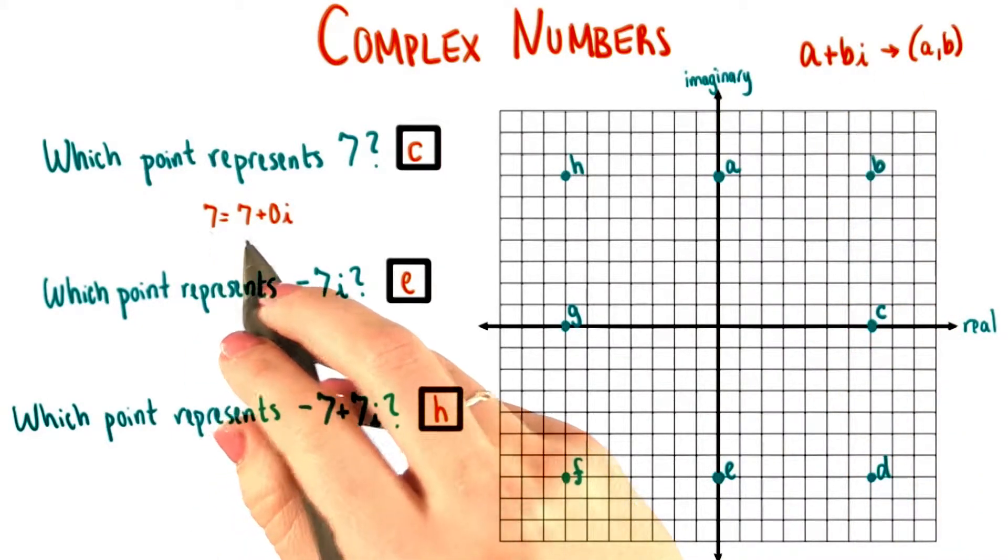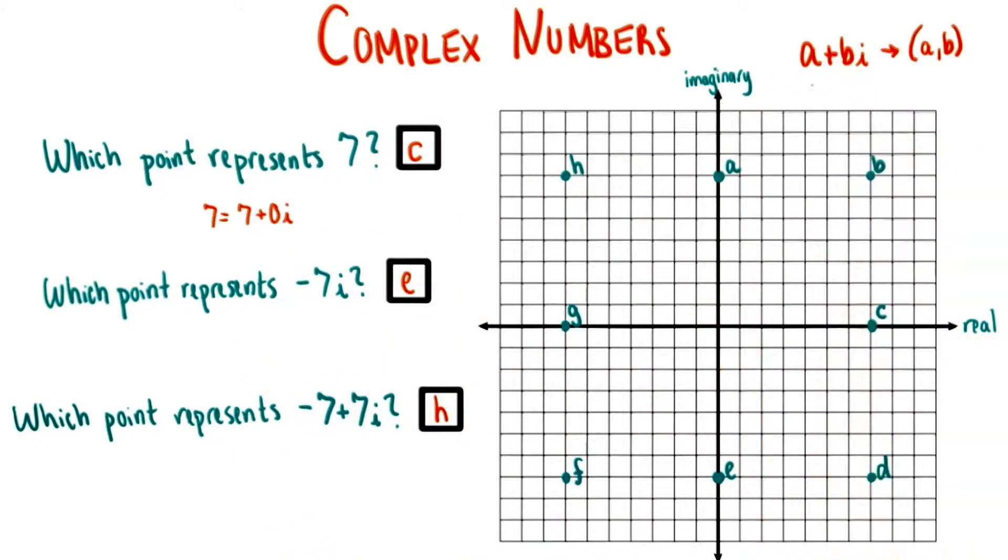The number 7 is equal to 7 plus 0i, if you want to write it like this. So it should be the point 7, 0, which is c over here. This makes sense. This is a real number, so it's written strictly along the real axis.